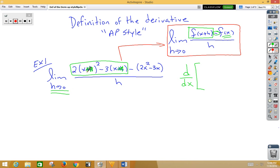If we stare at what's left, we have 2x squared minus 3x. So we're simply taking the derivative of that, which would be 4x minus 3. All done.